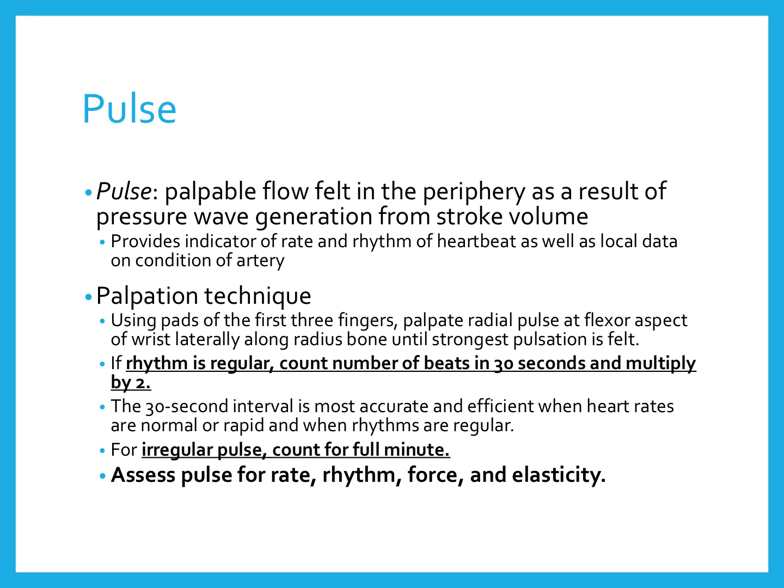Next, we'll move on to taking a pulse. A pulse is the sensation you feel when you palpate different positions of the body — specifically the carotid, radial, brachial, femoral, dorsalis pedis, and posterior tibial pulse sites. A pulse is the pressure wave generated from the stroke volume of the heart and is a good indicator of the condition of the artery. To palpate the radial pulse, use the pads of your first two or three fingers, starting at the thumb and sliding down to the wrist, feeling for the indentation just past the wrist bone where the pulsation is strongest.